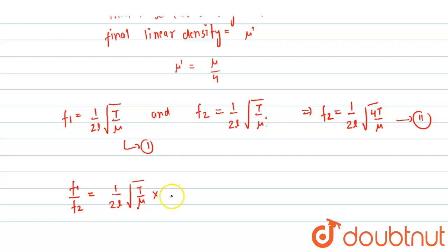multiplied by one upon two l, square root of four t upon mu. Okay, so from here we get that two l, two l get cancelled out, mu also get cancelled out, and tension t is also get cancelled out. Okay, so from here